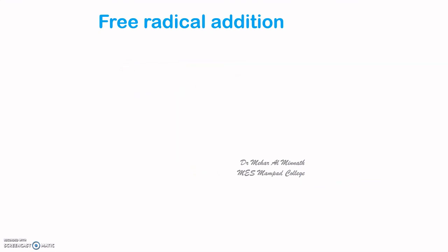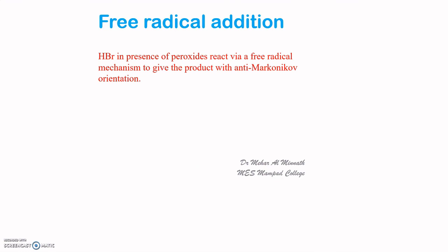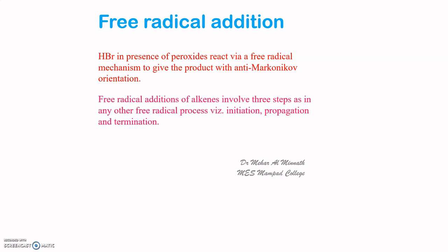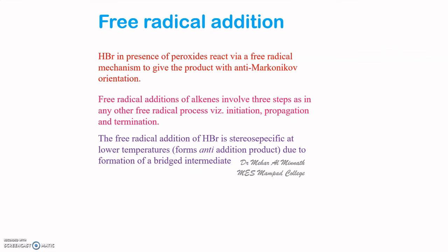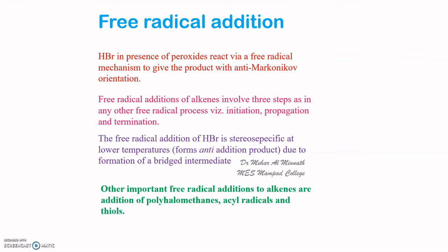To summarize free radical addition: HBr in the presence of peroxide proceeds via a free radical mechanism to give an anti-Markovnikov product, with three steps — initiation, propagation, and termination. The addition of HBr in the presence of peroxide is both regiospecific and stereospecific, particularly at low temperatures forming only the anti-product, while at higher temperatures C–C bond rotation allows the syn-product to also form. Other important free radical addition reactions include addition of polyhalomethanes, acyl radicals, and thiols.